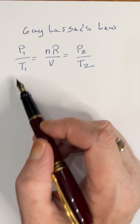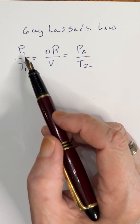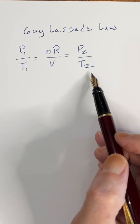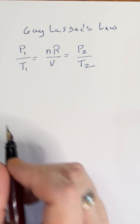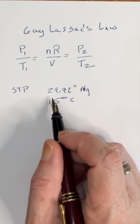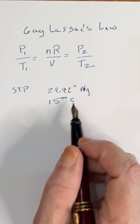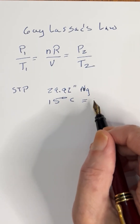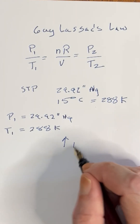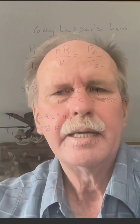Just to refresh our memory, Gay-Lussac's law relates the pressure and temperature of a certain volume of gas to another pressure and temperature of that same volume. Let's look at standard temperature and pressure: that's 29.92 inches of mercury and 15 degrees Celsius, which equals 288 Kelvin. Let's go ahead and take this up 10,000 feet. Nathan is absolutely correct that as you go up, the temperature goes down. How much? 2 degrees Celsius for every 1,000 feet.